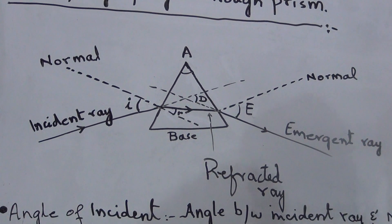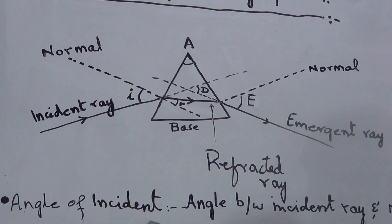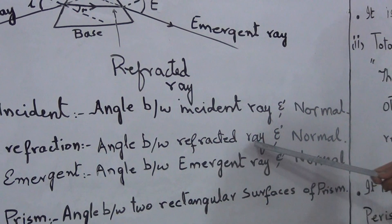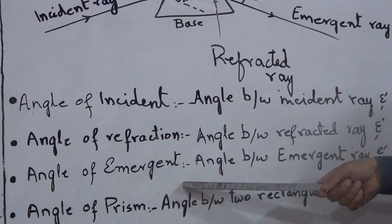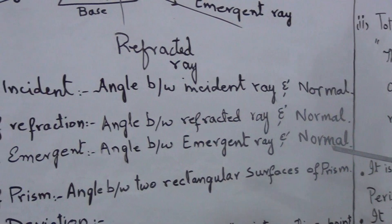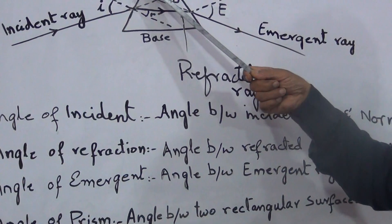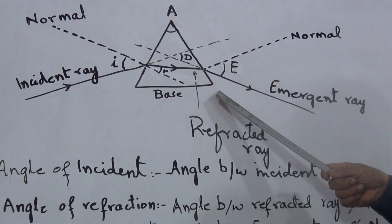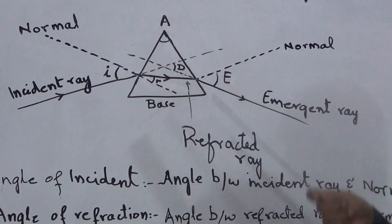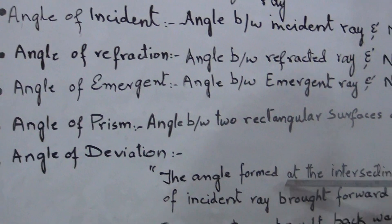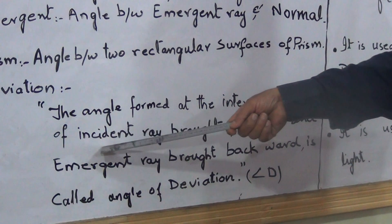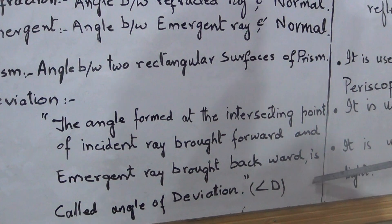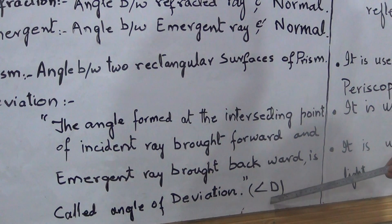To define these angles: the angle of incidence is the angle between the incident ray and the normal; the angle of refraction is the angle between the refracted ray and the normal; the angle of emergence is the angle between the emergent ray and the normal. The angle of prism is the apex angle, and the opposite side is called the base of the prism. The angle of deviation is the angle formed at the intersecting point of the incident ray brought forward and the emergent ray brought backward. It is denoted by angle D.